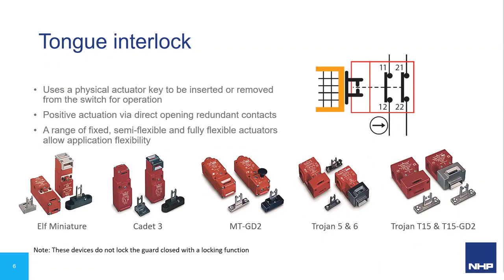Tongue interlock switches use a physical actuator key which is inserted into the switch to close the safety contacts. When the actuator is removed, the cam arrangement inside the switch forcibly opens the contacts to remove power from the safety control circuit, ensuring that even if contacts are stuck closed due to corrosion or welding, the force of physically removing the actuator breaks them open. The actuator is a special shape so only the correct actuator can enter the switch — you can't use a screwdriver or metal shim. The Guardmaster miniature ELF and Cadet 3 are ideal for small machines such as printers, copiers, and domestic machinery where space is limited.